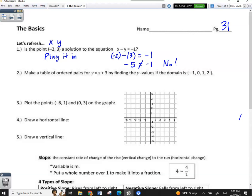The next question is probably the most challenging of the 5. It says, make a table of ordered pairs for y equals x plus 3 by finding the y values if the domain is, and then it gives us a set of numbers. First of all, everybody knows what a table looks like. Like, your x and y table. T chart. Remember that?